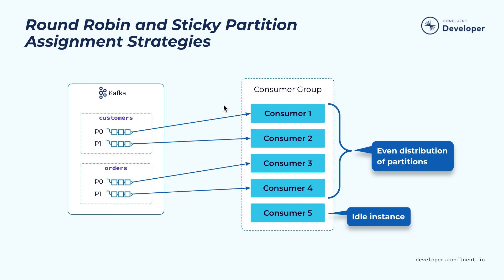Another variant of round-robin is called sticky partitioner. This improves round-robin by making a best effort to stick to the previous assignment during the next reassignment, so we try to reduce the number of partitions that need to be moved around across those consumer instances.